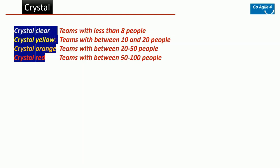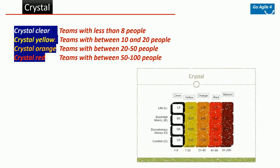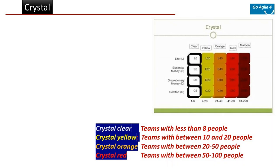In Crystal, there is no clear methodology, but the belief is that many times the output depends on the size of a team, and depending on team size the process and workflow changes. They give different names to different team sizes: Crystal Clear for teams with less than eight people, Crystal Yellow for 10 to 20 people, Crystal Orange for 20 to 50 people, and Crystal Red for 50 to 100 people.